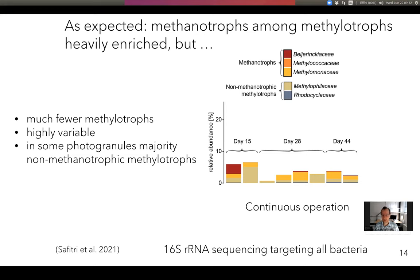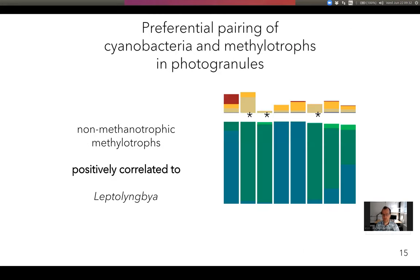To our surprise, we found a couple of granules where the majority of methylotrophs were actually non-methanotrophic. That means the functional group we expected to perform the intended ecosystem service is not present or barely present in these photogranules. This came as a big surprise because, as shown before, the reactor was overall fairly well doing its job. When we combined the cyanobacteria data with the methylotroph data, we can see that non-methanotrophic methylotroph-dominated photogranules coincide with an abundance of Leptolyngbya — suggesting a preferential pairing of Leptolyngbya with non-methanotrophic methylotrophs in these granules.